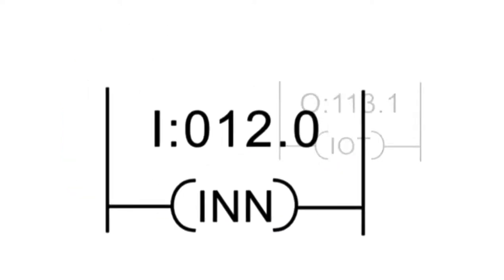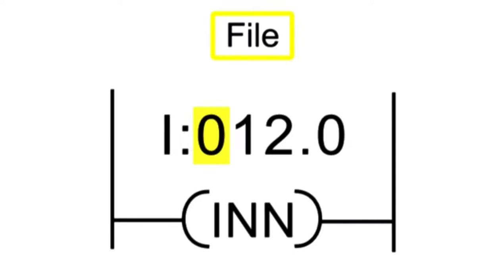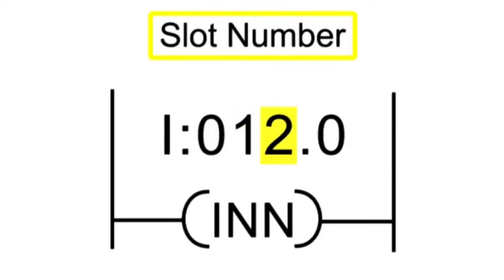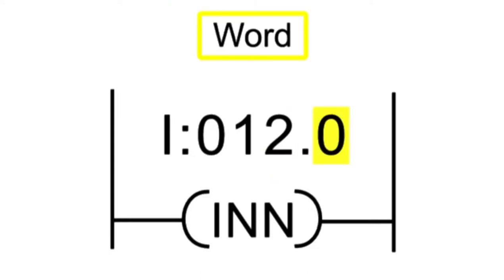Immediate instructions are addressed with the file, rack, and slot numbers separated by a decimal, with the word to be updated.